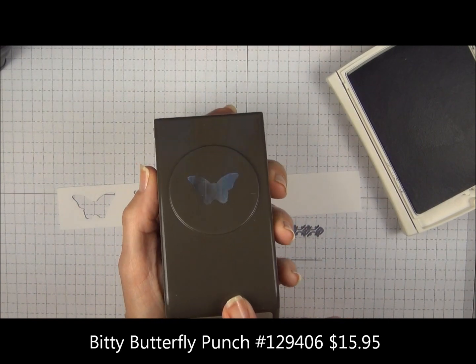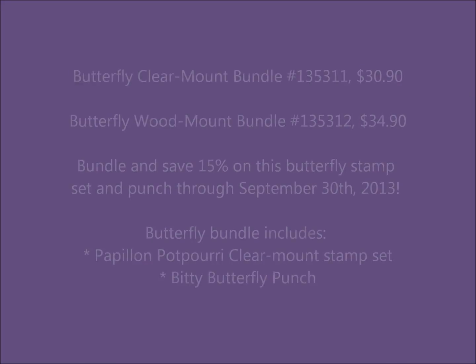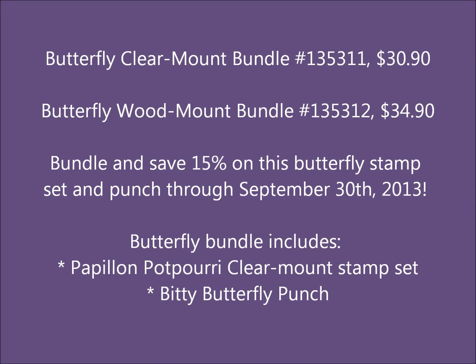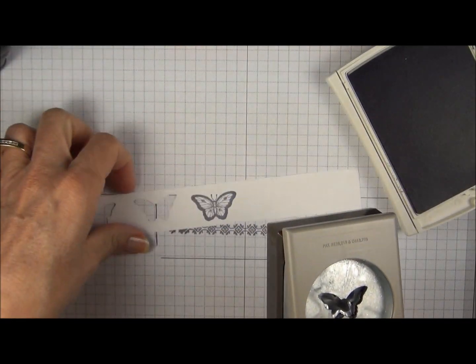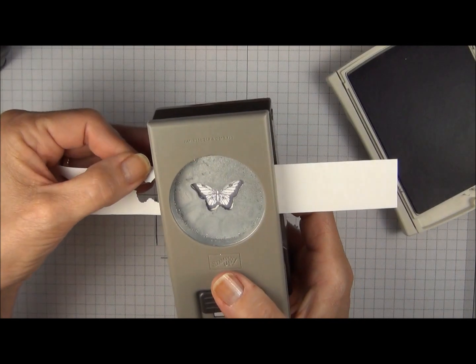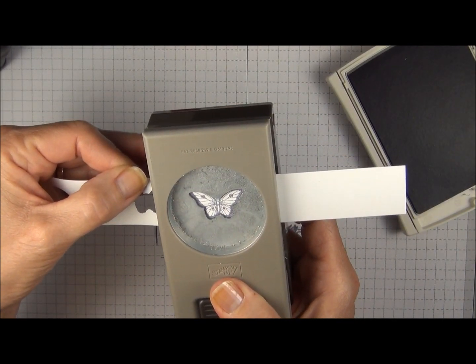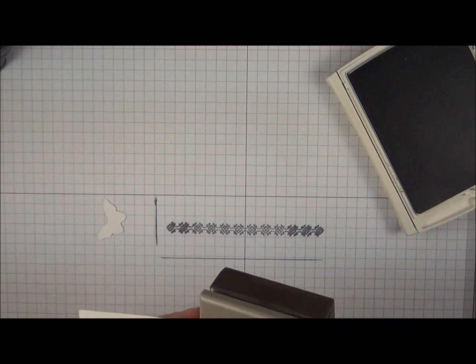We have another butterfly punch. This one is called Bitty Butterfly Punch. So we're going to turn the punch upside down. Slide the latch open. Hold this in one hand. Get it centered right inside and give that a good squeeze.